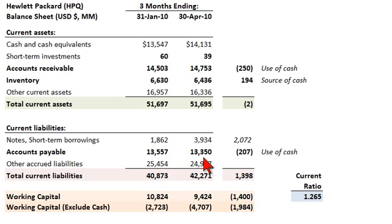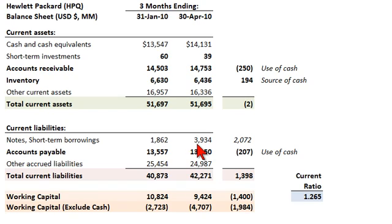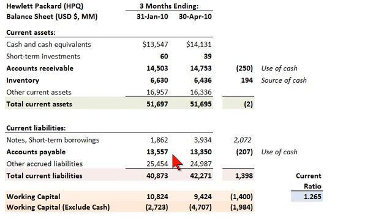Going over to the right-hand side of the balance sheet — current liabilities — these are sequenced approximately in order of liquidity, so the shortest-term obligations first. Notes and short-term borrowings are either short-term notes or the current portion of long-term debt; in HP's case, almost $4 billion. Then the next key account — I've bolded this — accounts payable, the analog to accounts receivable. This is the amount Hewlett-Packard owes to its suppliers for purchases made to produce its products — about $13.4 billion.